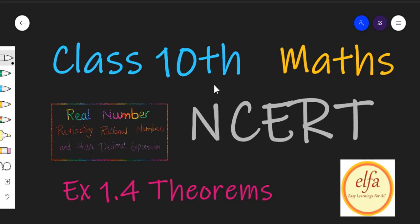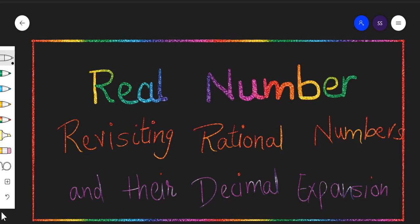Hello dear learners, welcome to Easy Learnings for All. We are discussing the first chapter of Real Numbers for Class 10. Today we are discussing problems related to Exercise 1.4. Exercise 1.4 is about revisiting rational numbers. Rational numbers के बारे में हम पहले से बात कर चुके हैं, so इसमें हम rational numbers और उनके decimal expansion के बारे में कुछ और बात करेंगे.